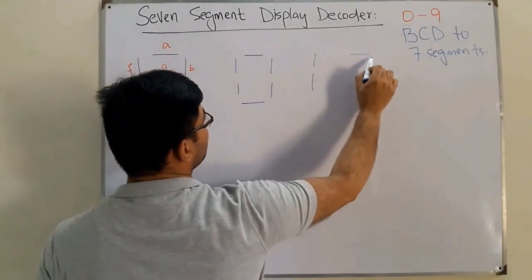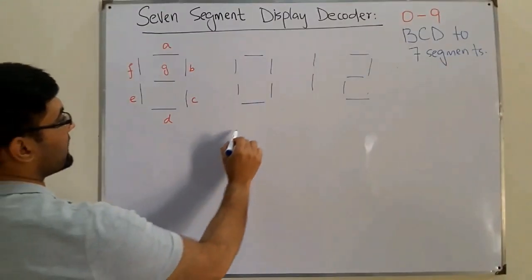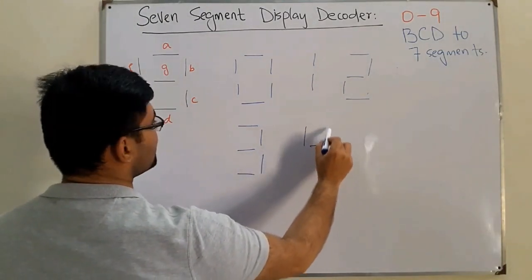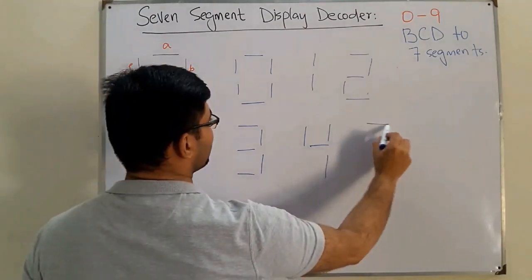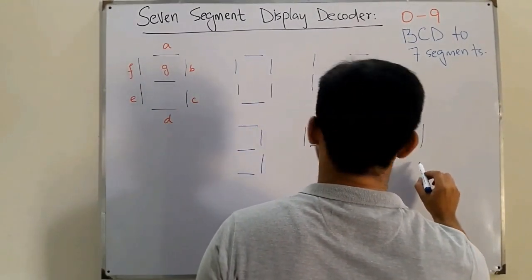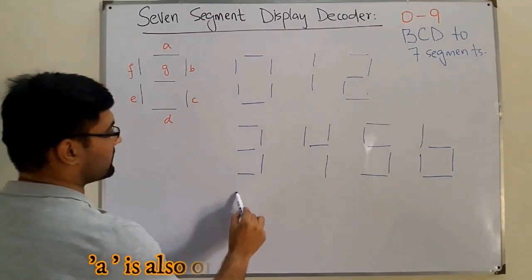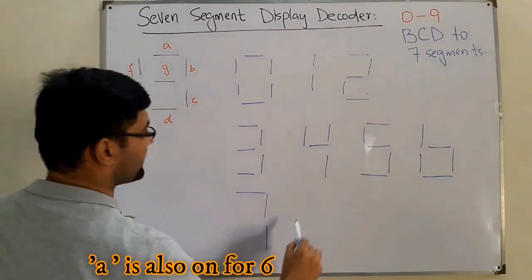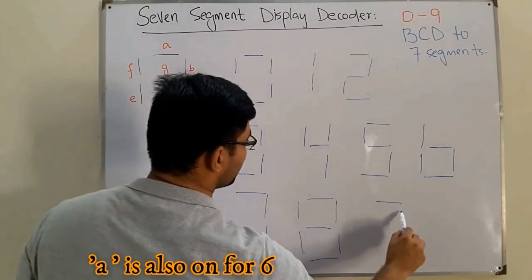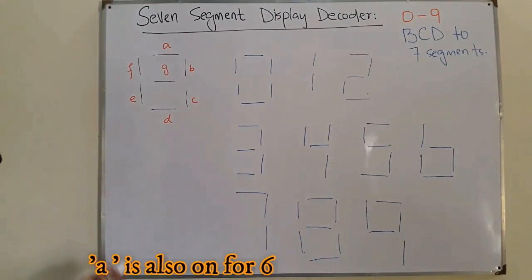For two: a, b, g, e, and d are on. For three: a, b, c, d, and g are on. For four: f, g, b, and c. For five: a, f, g, c, and d. For six: f, e, d, g, and c. Seven is a, b, and c. For eight all segments are on. For nine: a, b, c, g, and f are on.